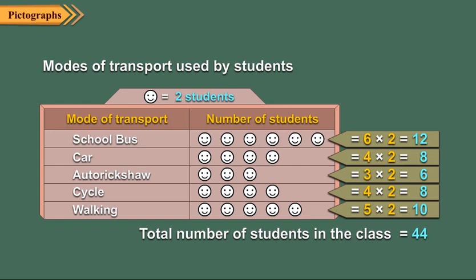Also, the number of symbols against school bus is maximum. So, again looking at the pictograph, we can say that maximum number of students of this class come by a school bus.